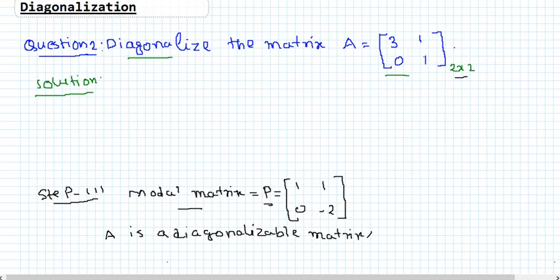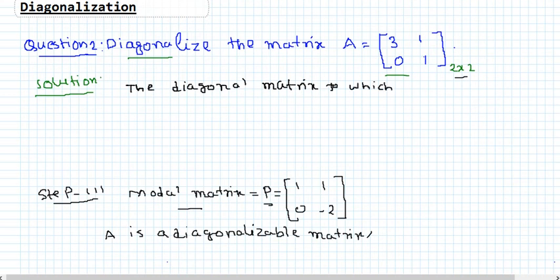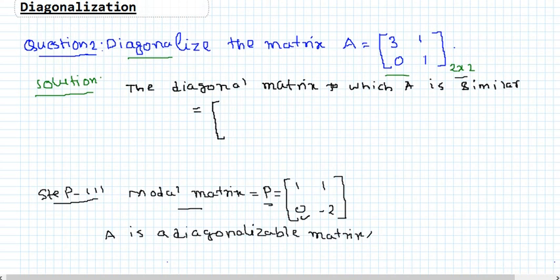The diagonal matrix to which A is similar has diagonal entries corresponding to the eigenvalues. The diagonal entry corresponding to eigenvector [1, 0] gives eigenvalue 3, and corresponding to eigenvector [1, -2] gives eigenvalue 1. So the diagonal matrix D = [[3, 0], [0, 1]].